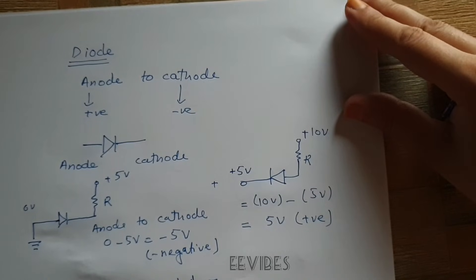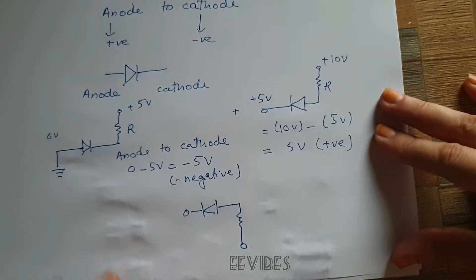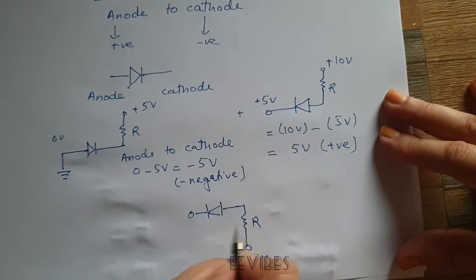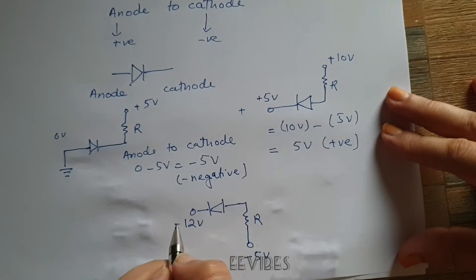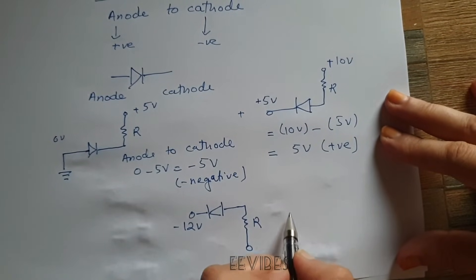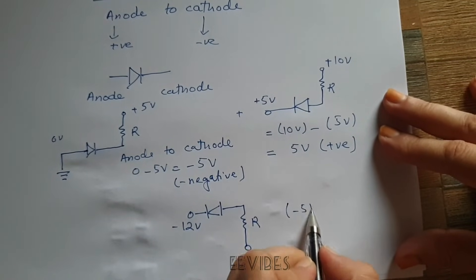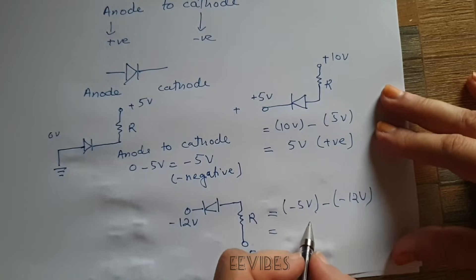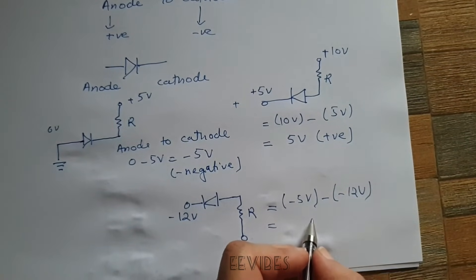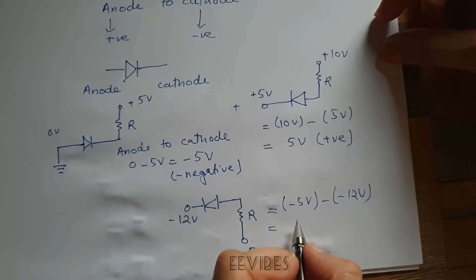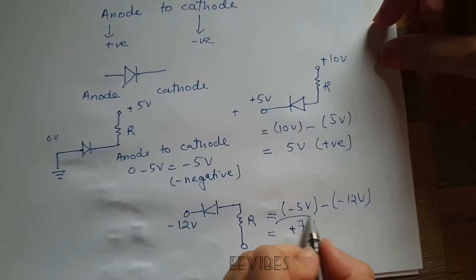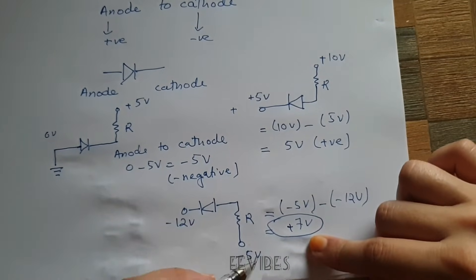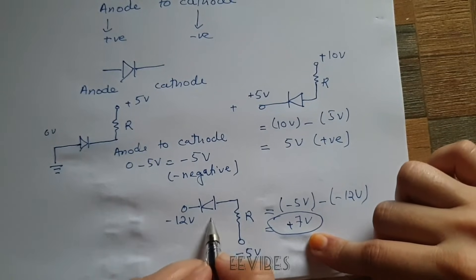Let's consider another scenario where negative voltage sources are connected at both terminals of the diode. We have minus five volts at the anode terminal and the cathode is connected to minus twelve volts. Calculating the anode-to-cathode potential: minus five volts minus (minus twelve volts) simplifies to plus seven volts. Since this is a positive value, a positive potential exists from anode to cathode, and therefore the diode will conduct.